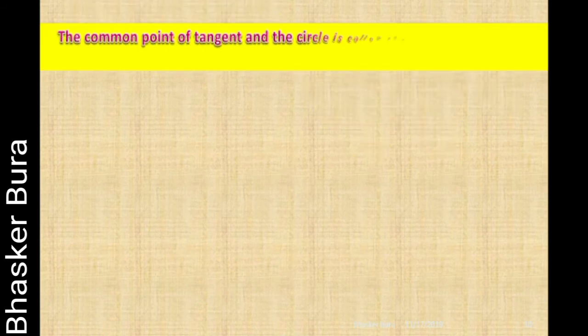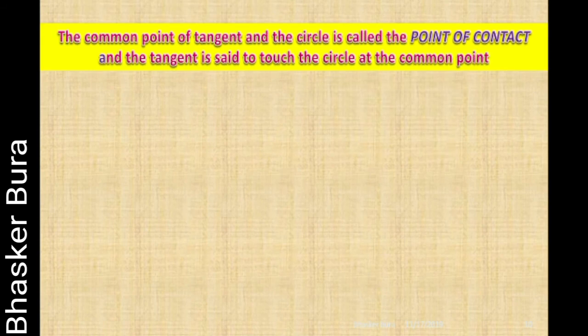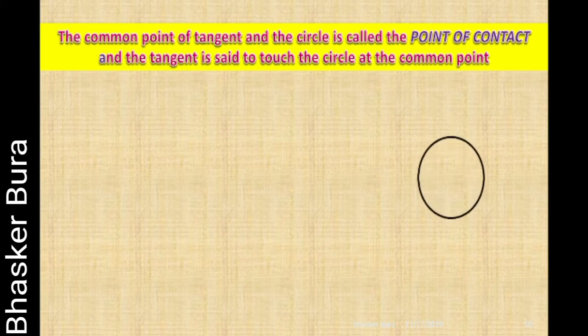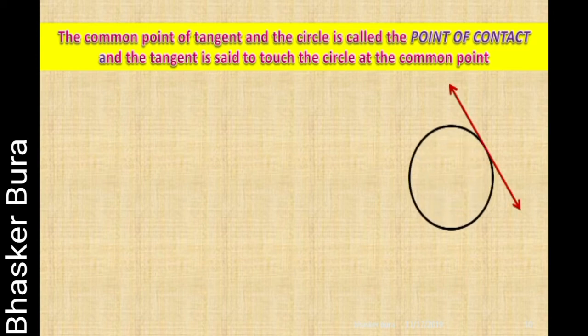The common point of a tangent and the circle is called the point of contact, and the tangent is said to touch the circle at the common point. Where the circle and the tangent meet each other, that point is called the point of contact or point of tangency.